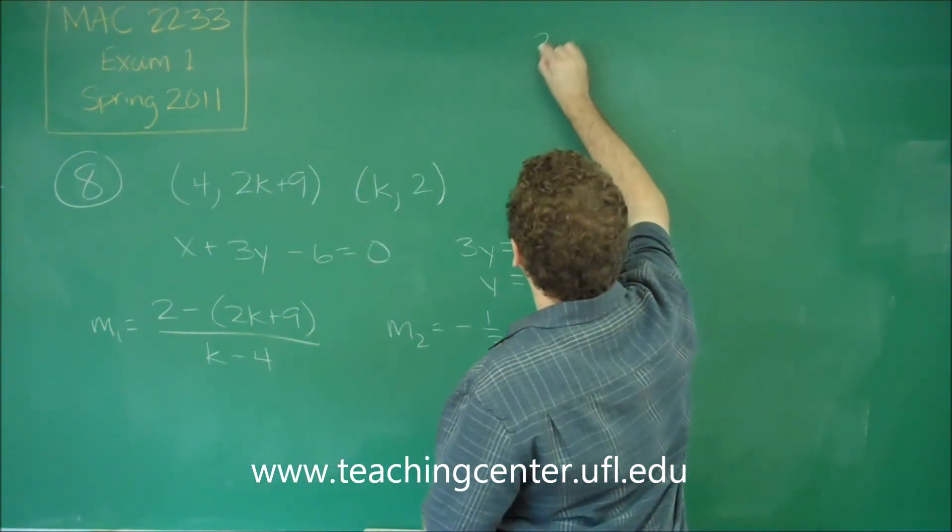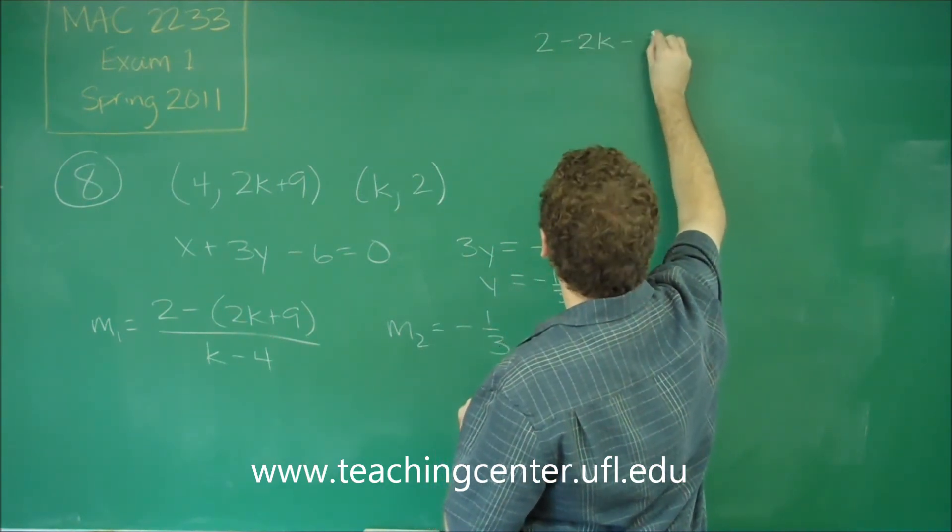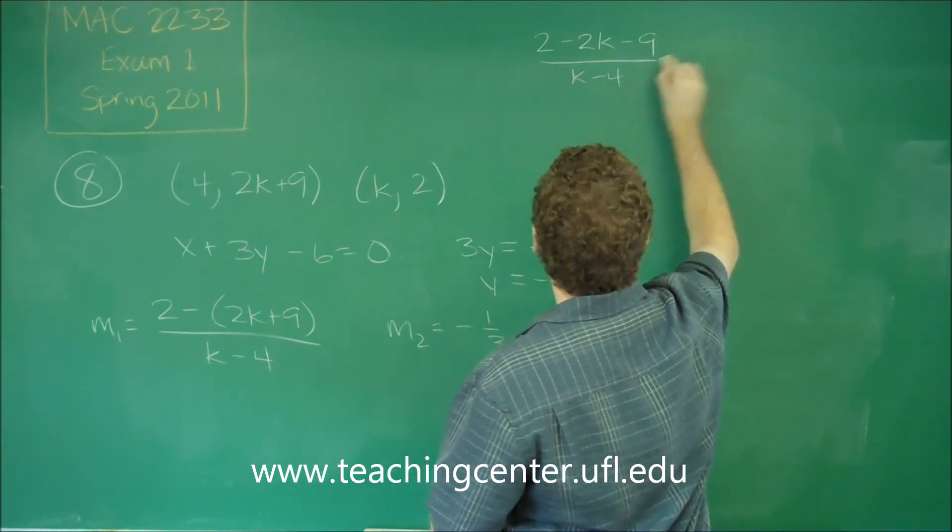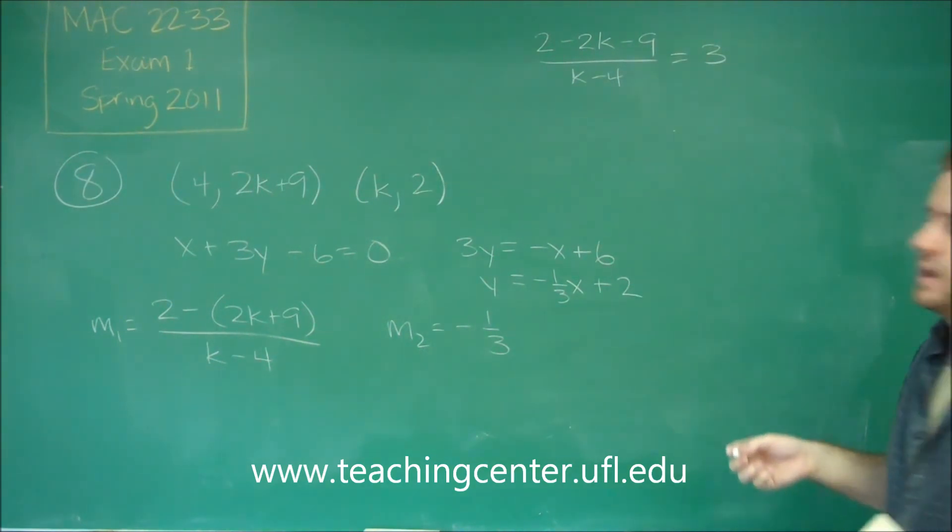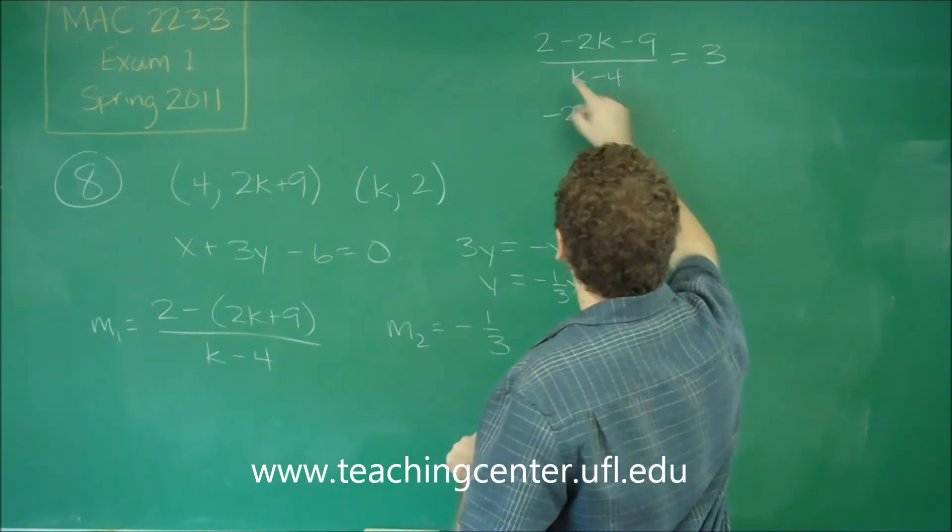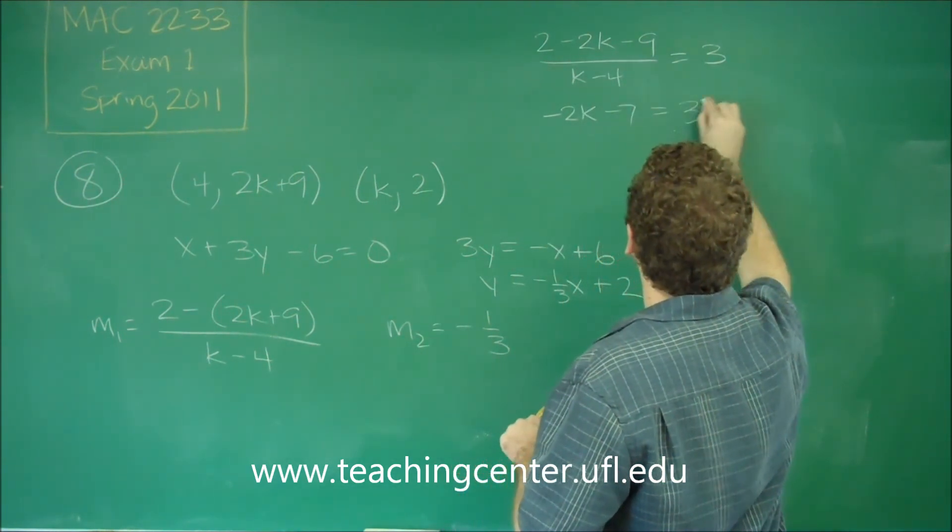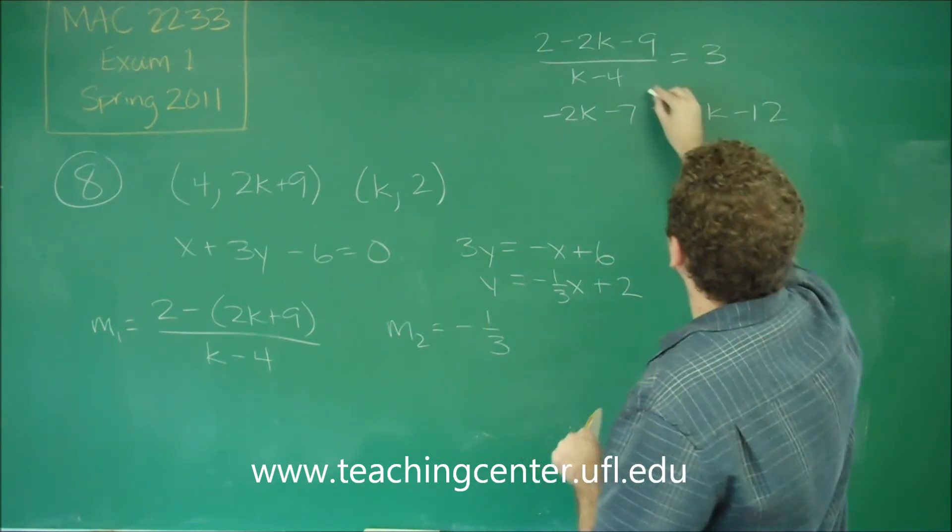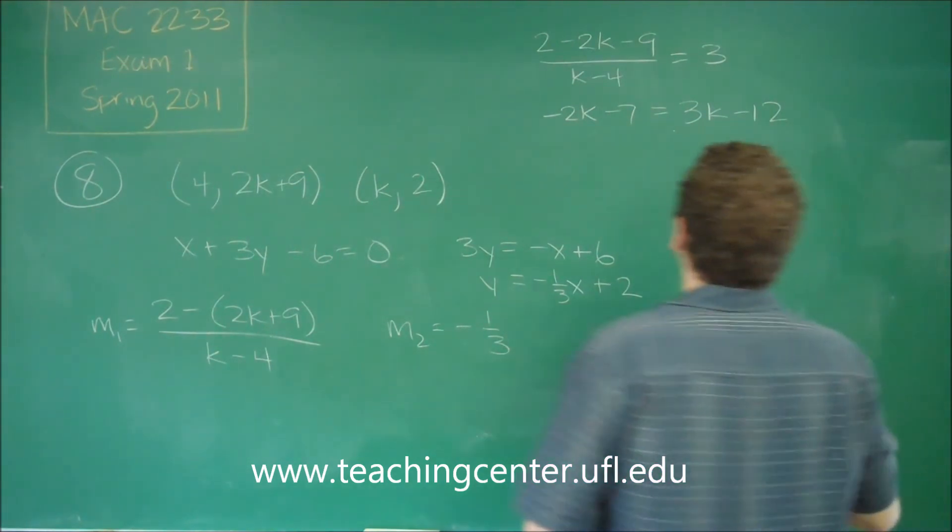Let's distribute that negative up there. We get 2 - 2K - 9 over K - 4. We know this has to equal 3. The best way to solve that is to multiply the K - 4 over and distribute. Here we get -2K. 2 - 9 will give you -7. Over here we get 3K - 12 if we multiply K - 4 times 3. Now we just need to solve for K.